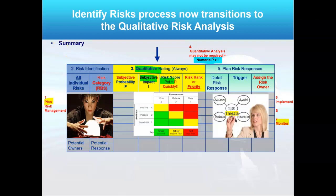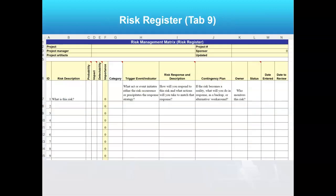Hi team and welcome back. We had just been talking about the risk register — that's tab nine again in your project management toolkit for supervisors. Notice again, you're doing this with the team, asking key stakeholders what risks they see, and writing them all down. The risk register will have all risks, and you'll note the probability and impact, which will be subjective at first — really it's to help you prioritize.